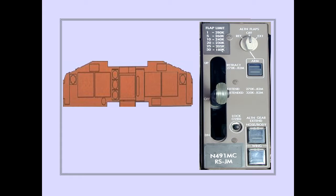The landing gear lever is located on the center panel. The gear lever has three detented positions: up, off, and down.